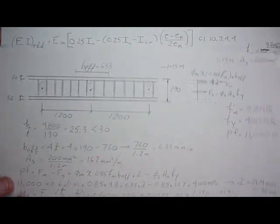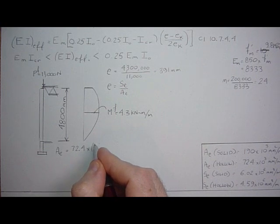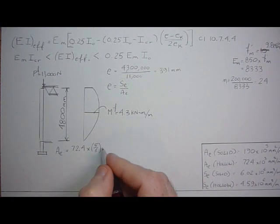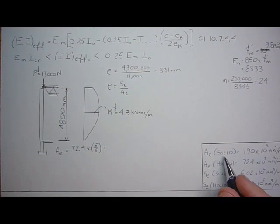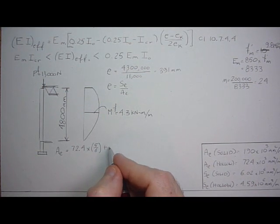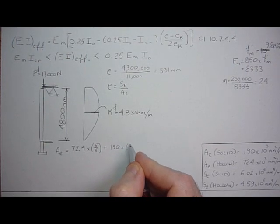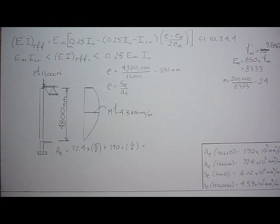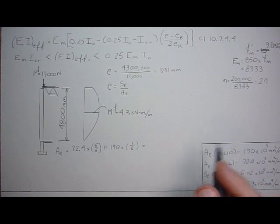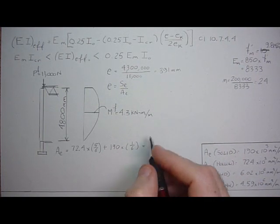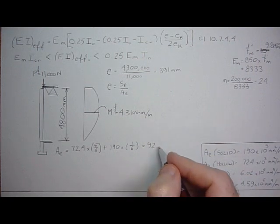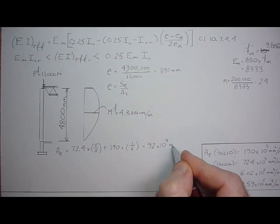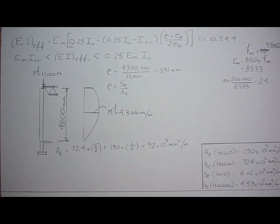So times five over six, plus the area solid which is 190 times one over six. One out of every six cores are solid. So let's calculate that. It's going to be 72.4... So that's 92 times 10 to the third millimeters squared per meter.